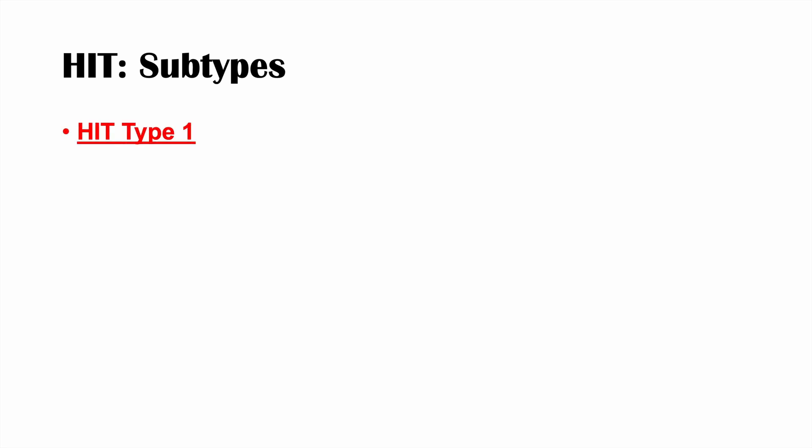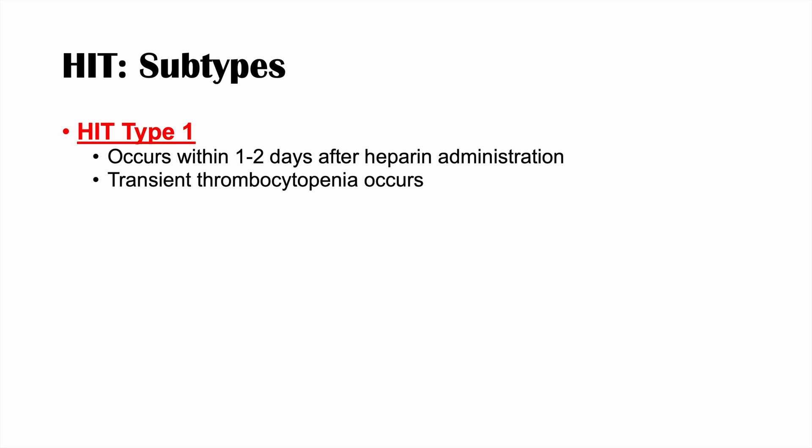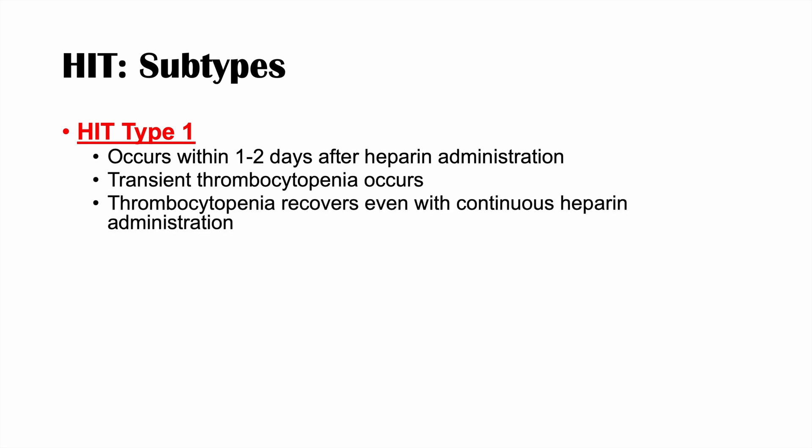There are two types of HIT. Type 1 occurs within 1 to 2 days after heparin administration. This is actually just a transient thrombocytopenia — the platelet level decreases temporarily, but the thrombocytopenia recovers even with continuous heparin administration. Importantly, HIT type 1 has no associated increased thrombotic risk.